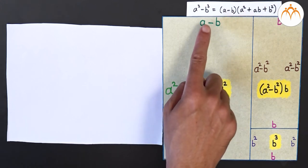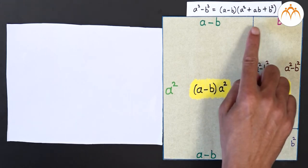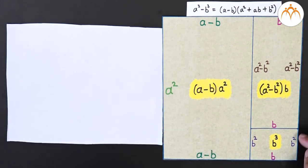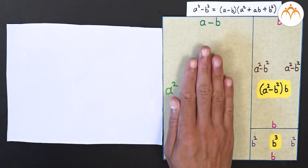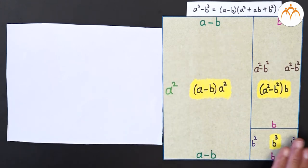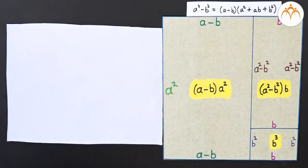Now we have to subtract b cube from a cube. So let us draw a rectangle with area b cube inside this rectangle — we mark length b on one side and length b squared on the other, so its area is b into b squared which equals b cube. Whenever we say a cube minus b cube, we are subtracting this area from the complete area. So a cube minus b cube corresponds to the two remaining areas — we just add these two areas to get the expansion.